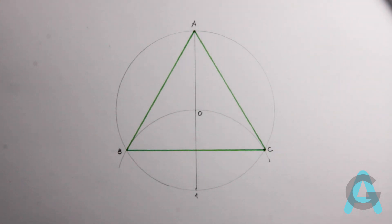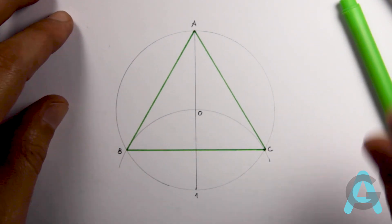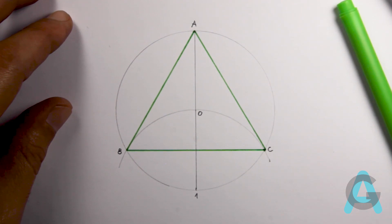And here it is, our equilateral triangle, or the division of a circle in 3 equal parts.